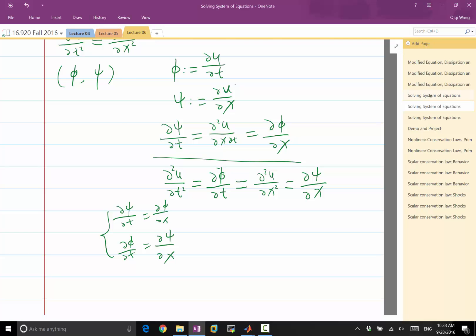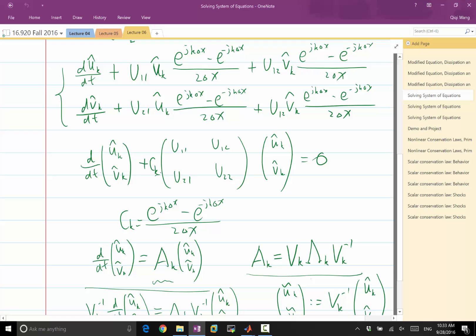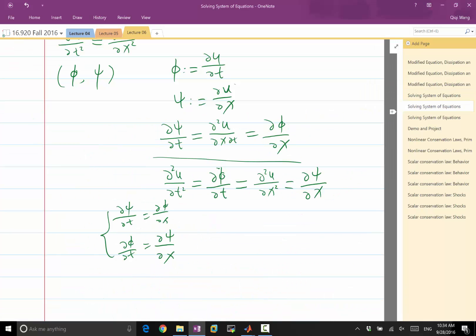It corresponds to our previous example, where this matrix, u11, u12, u21, u22, is equal to what? 0, 0, because the psi time derivative does not depend on psi spatial derivative. And the phi time derivative doesn't depend on phi spatial derivative. They only have a coupling term. And it's minus 1, minus 1 here.